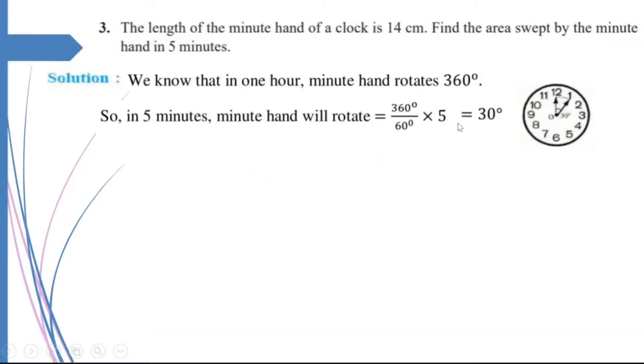So, I have got the angle the minute hand will cover in 5 minutes. Now, carefully see when the minute hand moves from here to here, what area will be swept? The area swept will be equal to a sector. For this sector, I have theta is equal to 30 degrees and the radius is equal to 14 centimeters.